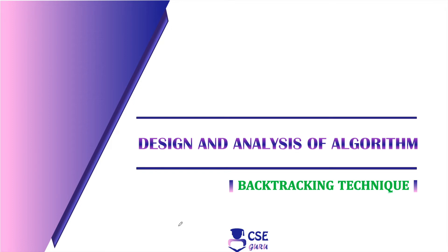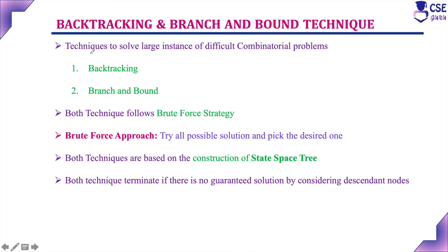Welcome to CSE Guru. We will move on to the next algorithmic design technique: backtracking. There are two techniques to solve large instances of difficult combinatorial problems. Combinatorial problems are problems that provide solutions by grouping, ordering, or assigning a value. The two techniques are backtracking and branch and bound. Both techniques follow the brute force approach strategy.